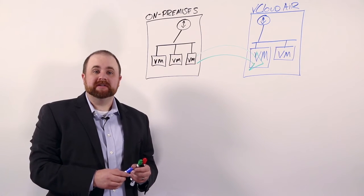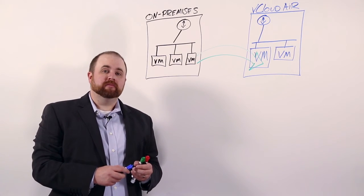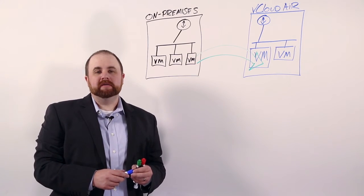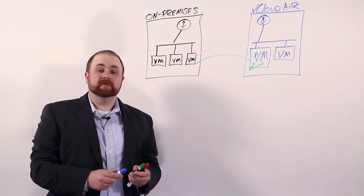VMware announced using NSX on-premise with vCloud Air to allow your security policy or firewall rules to be portable and follow the virtual machine no matter where they live.